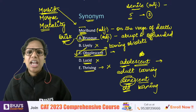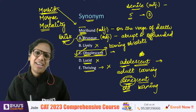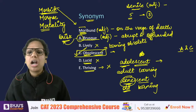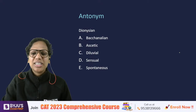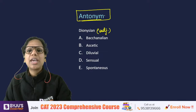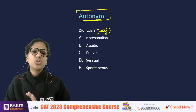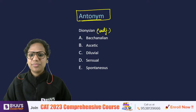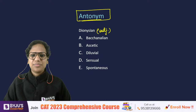Through smart elimination you can land at the correct answer. Even if you're highly confused between two options, just mark something — no negative marking. Coming to the next question: an antonym question. The word is 'Dionysian.' Please read instructions carefully — when I say antonym, don't give me a synonym. That is a common error students make.